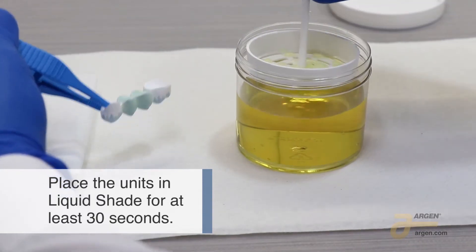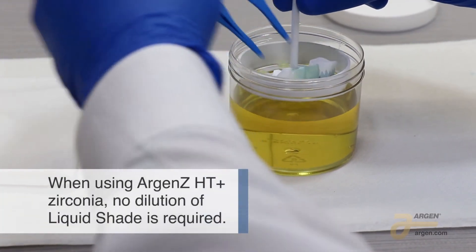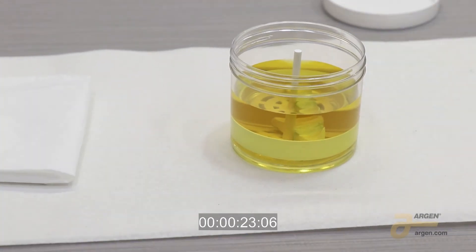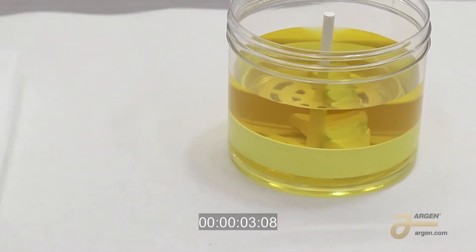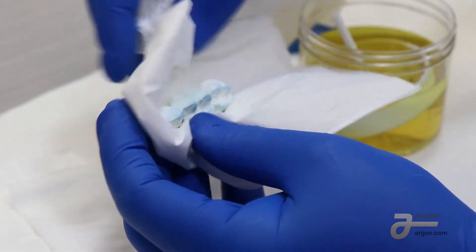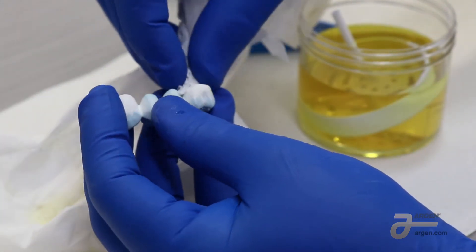Place the units in liquid shade for a minimum of 30 seconds. Remove the units and blot excess liquid with absorbent tissue and clean compressed air to ensure even shading.